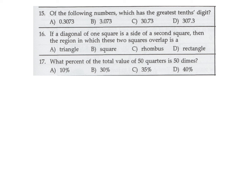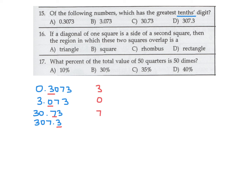Of the following numbers, which has the greatest tenths digit? Writing them out: 0.073, 3.073, 30.73, and 307.3. The tenths digit for each is 0, 0, 7, and 3 respectively. The greatest tenths digit is 7, so that's number 15, answer C.